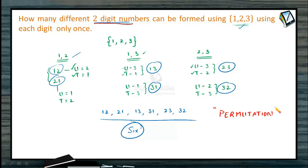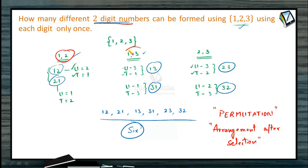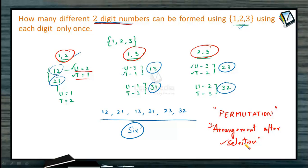In this process, we did two jobs: first, we selected two numbers from the set; second, we arranged them according to their positions — units position and tens position. Such a job of arrangement after the required selection is called a permutation.